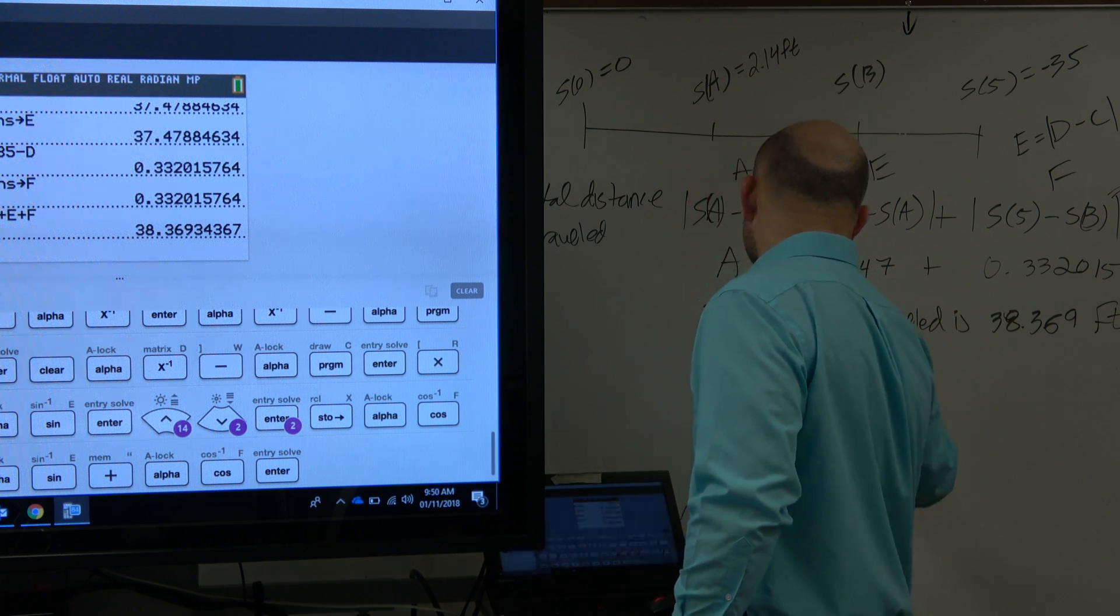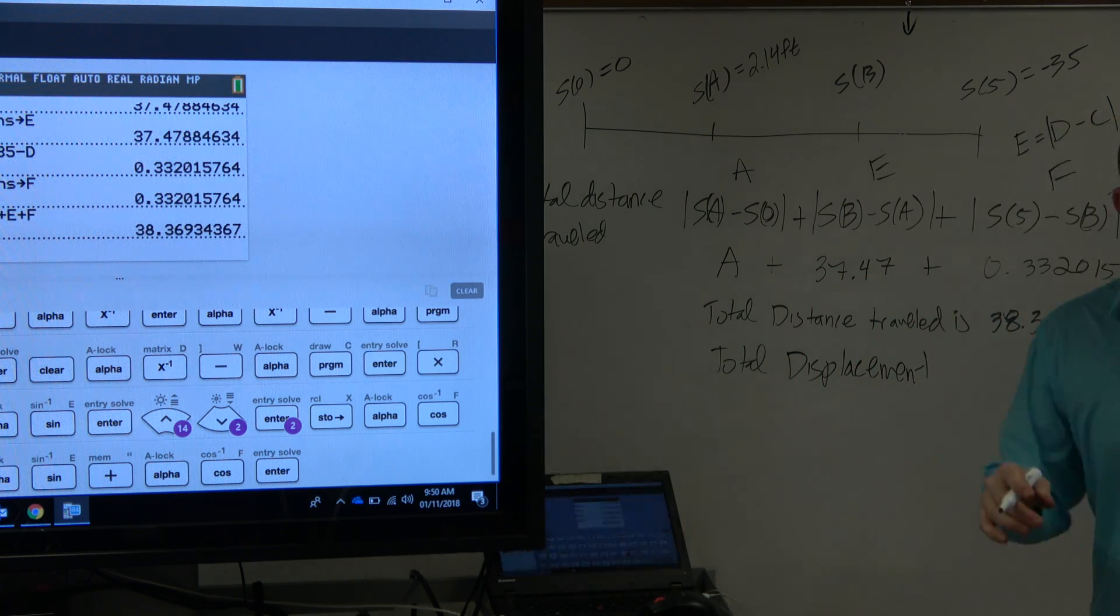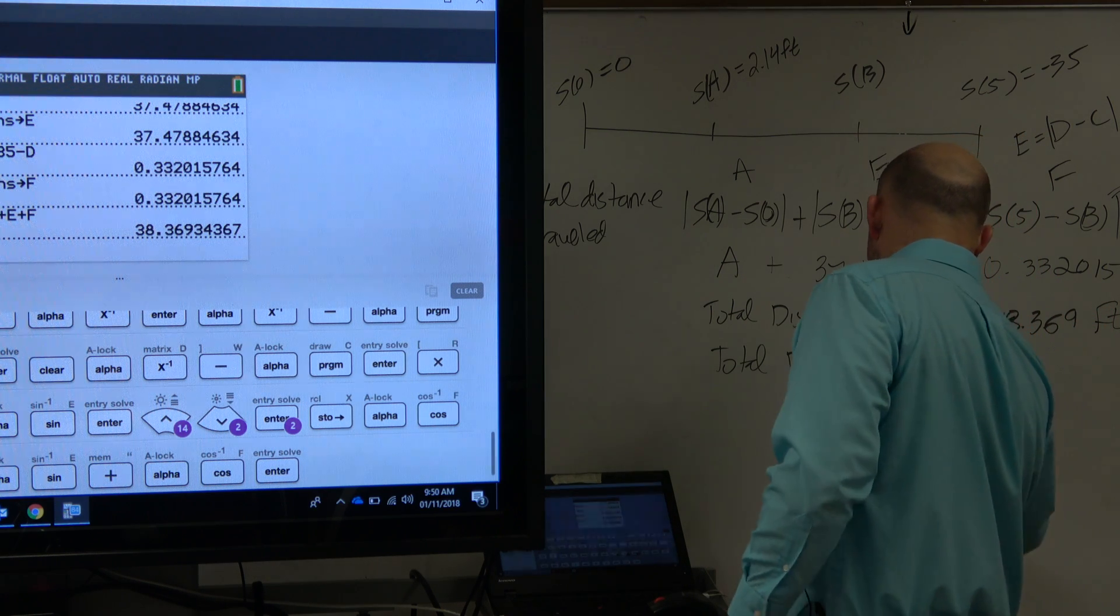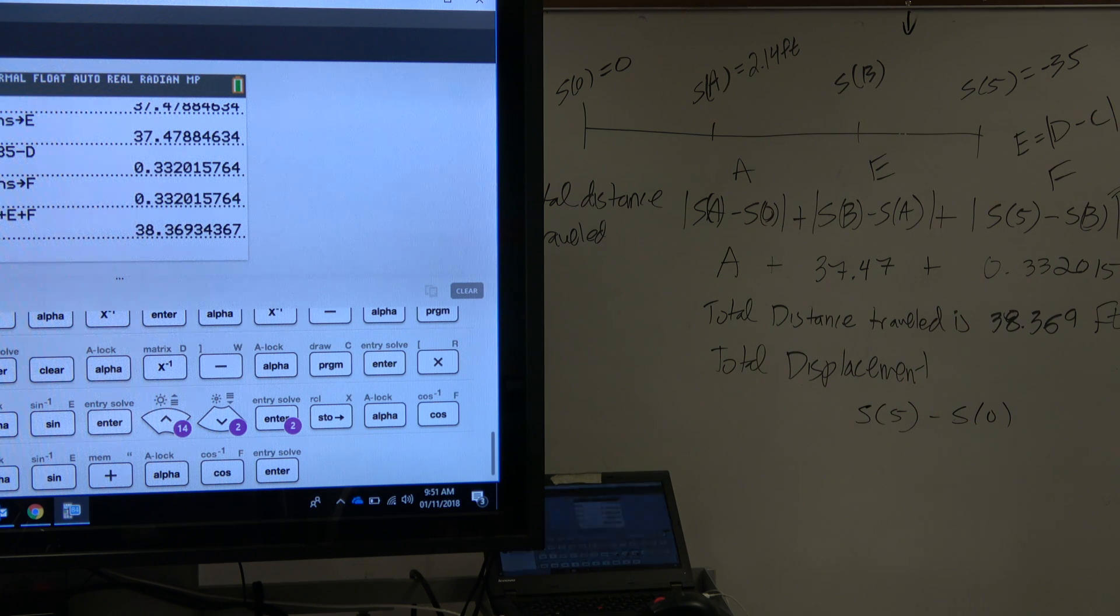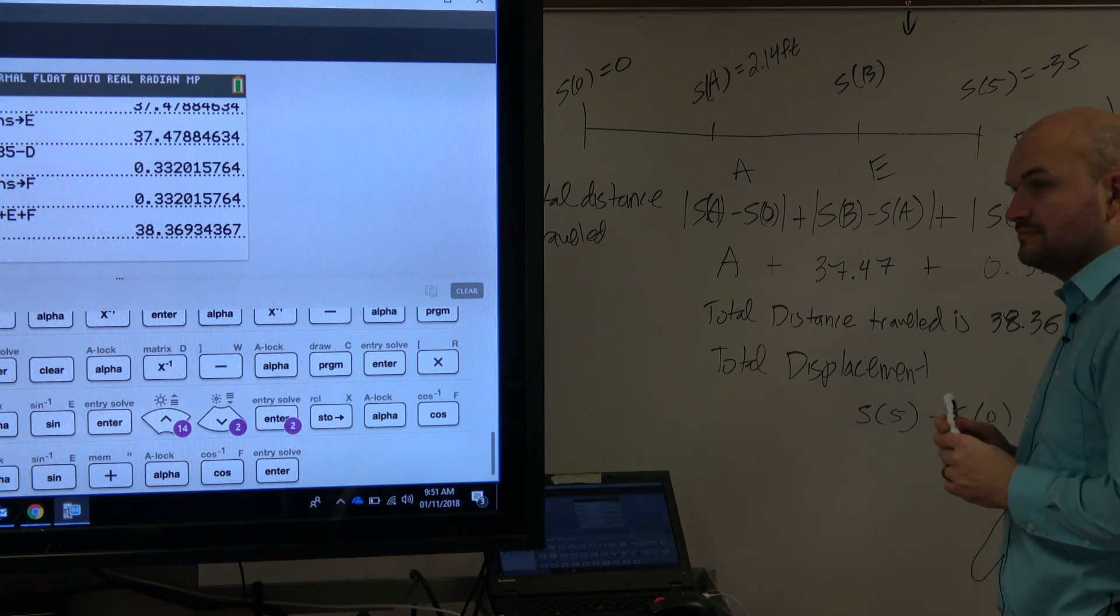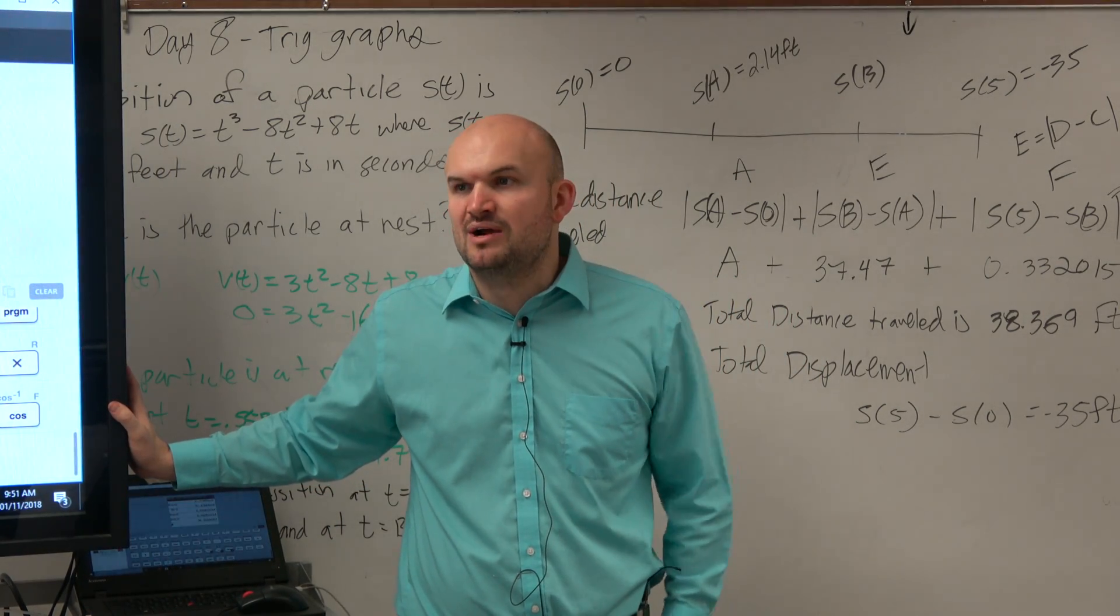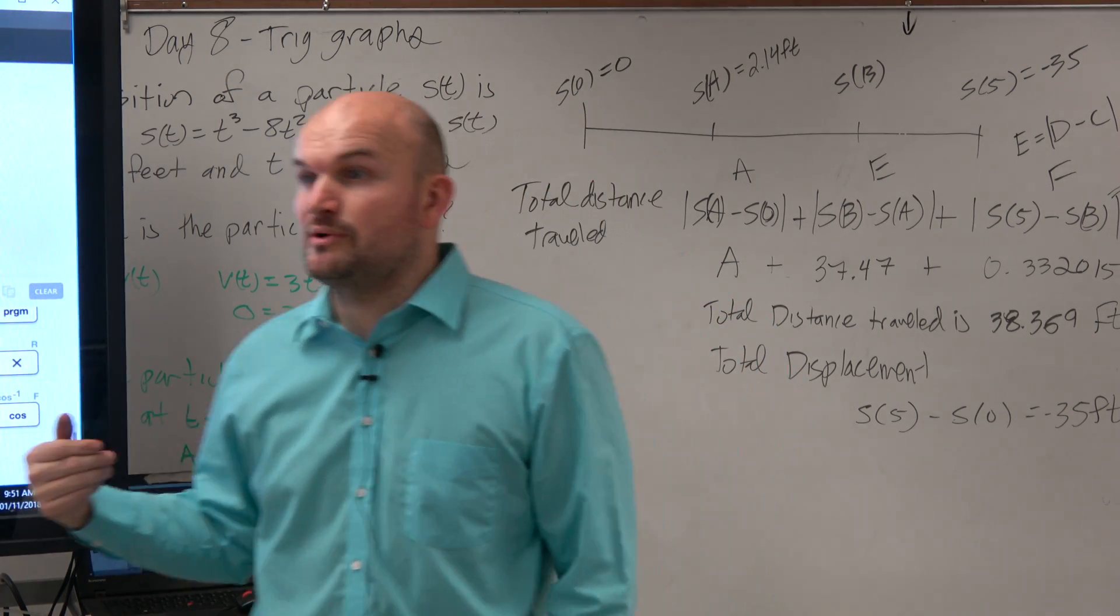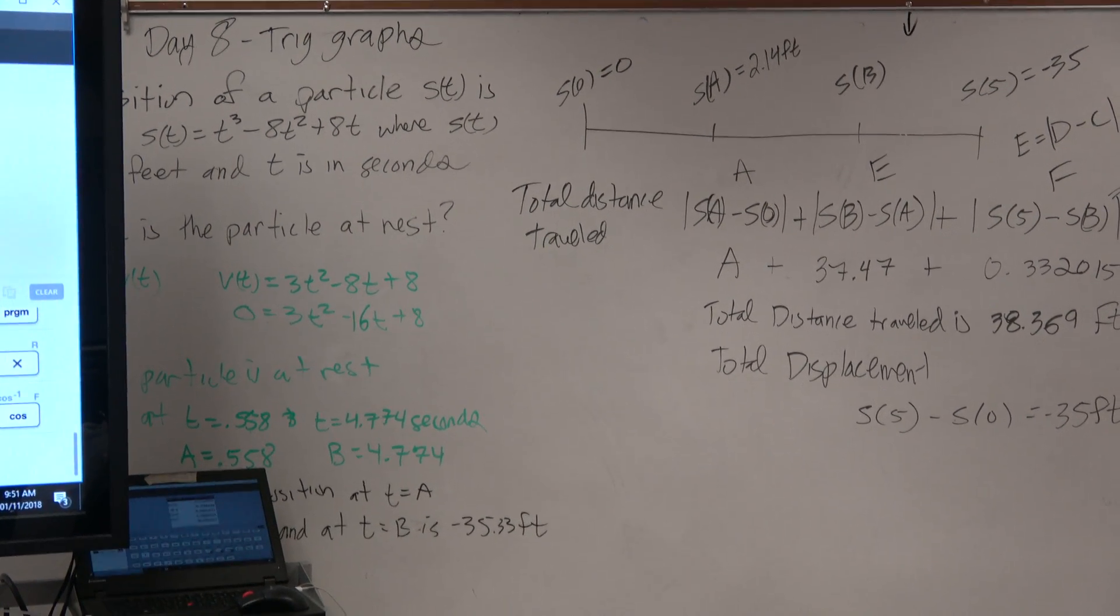Now, what is the total displacement? That is just going to be where you end up from where you started, right? So total displacement is just s of 5 minus s of 0. So what was negative 35 minus 0? Right? So that's going to be equal to negative 35 feet. Or what does negative 35 feet mean in terms of left or right? 35 feet left, right? We didn't really talk about what this particle is doing. Or you could say 35 feet below or down or something like that. Does that make sense? So a lot of times, if it's in the.